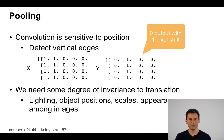So we need to have some mechanism for giving us invariance with regard to translations, lighting, object position, scales, appearance and so on. And this is exactly where pooling comes in handy.